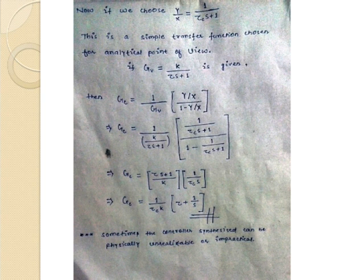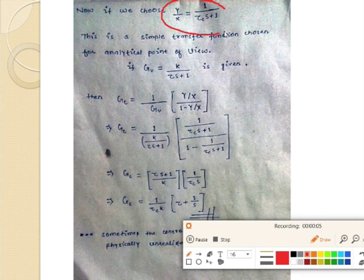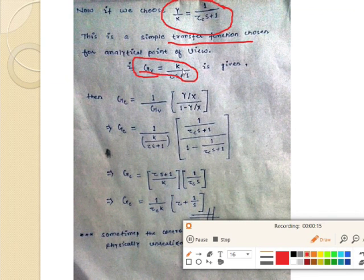Now if we choose the first-order dynamic having a transfer function Y/X equal to 1/(τs+1), this is a simple transfer function from any analytical point of view. If our Gv is equal to K/(τs+1) is given, then our Gc is given by 1 by Gv times Y upon X upon 1 minus Y by X.